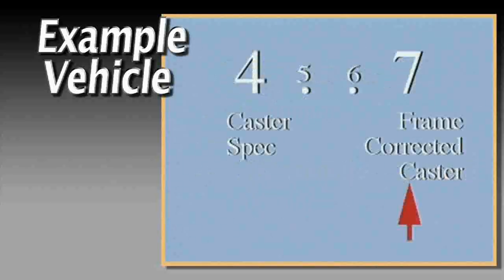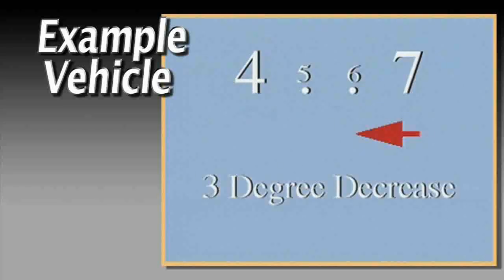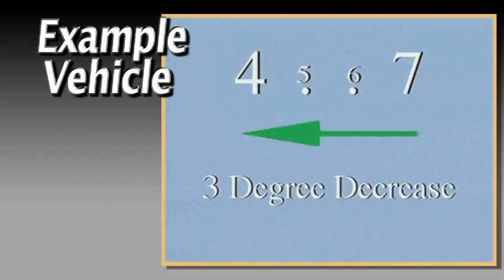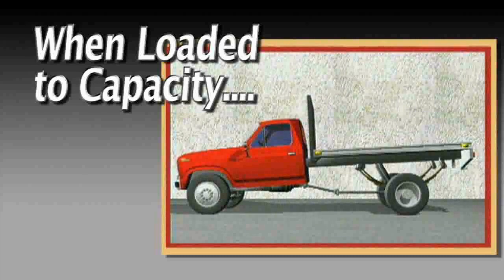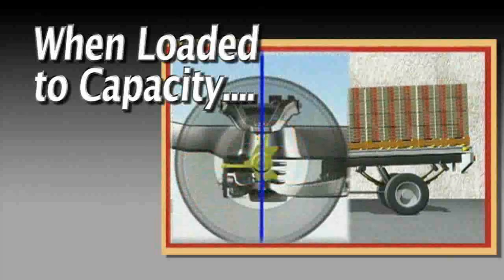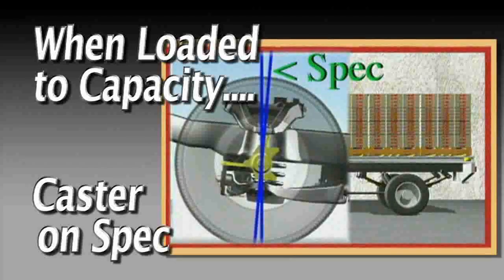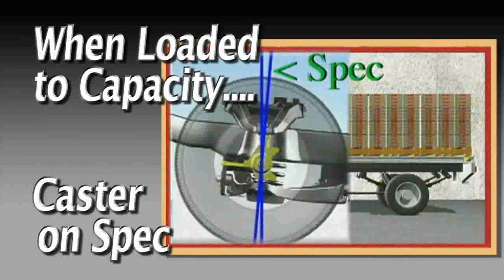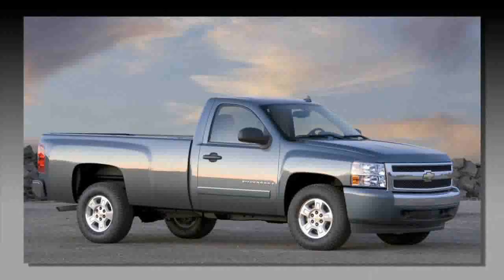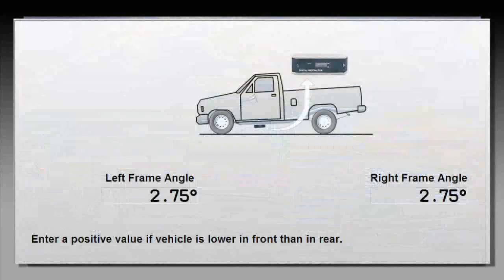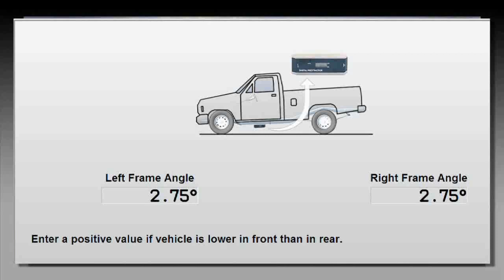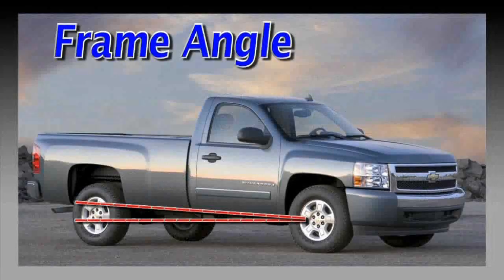Compare this to the preferred specifications. The required correction will be a three-degree decrease in caster. Now, when the vehicle is loaded to capacity, caster will shift positive to the preferred specification. When aligning utility vehicles, always refer to the manufacturer's service documentation to determine if frame angle should be considered.